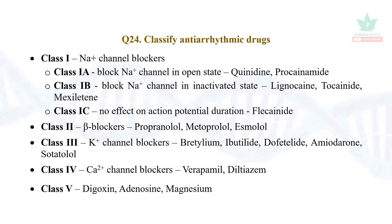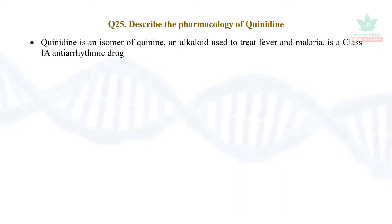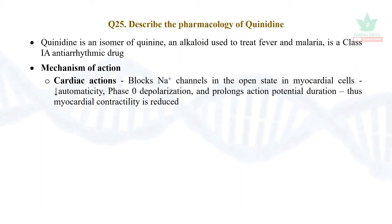Class 5 drugs include digoxin, adenosine, and magnesium. First, let us describe the pharmacology of quinidine. Quinidine is an isomer of quinine, obtained from the cinchona plant. It is a Class 1a anti-arrhythmic drug. Its mechanism: it blocks sodium channels in the open state in myocardial cells, decreases automaticity in the SA node, and phase 0 depolarization is reduced — meaning it is prolonged.